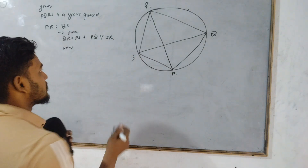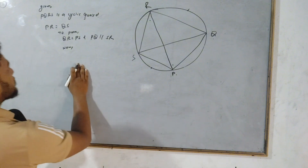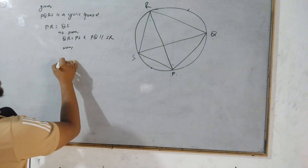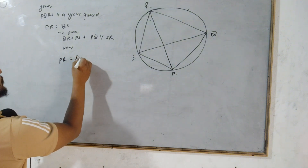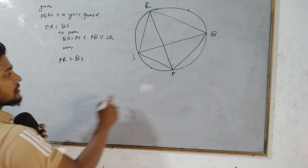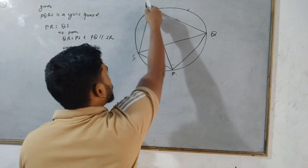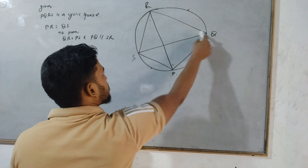If you have any questions, please comment in the comment box. Now let's do this question. How do we do this? We have given that PR and QS are equal. PR is equal to QS.